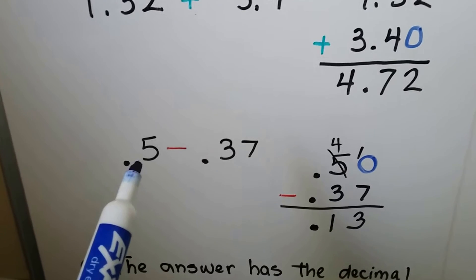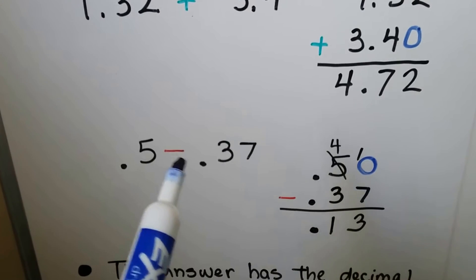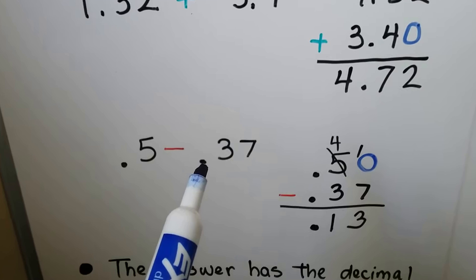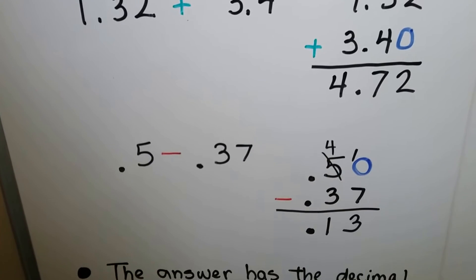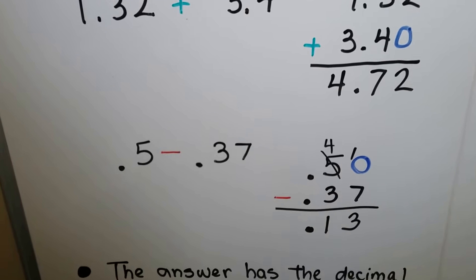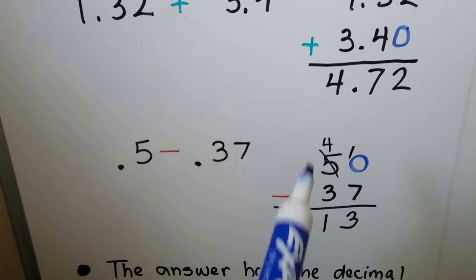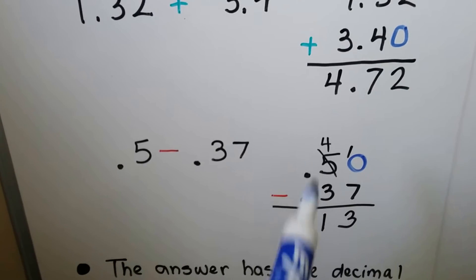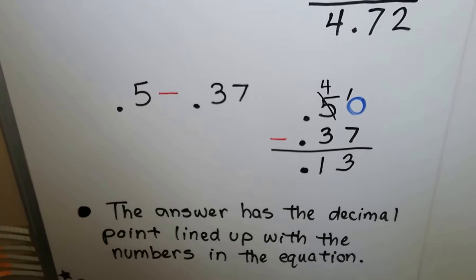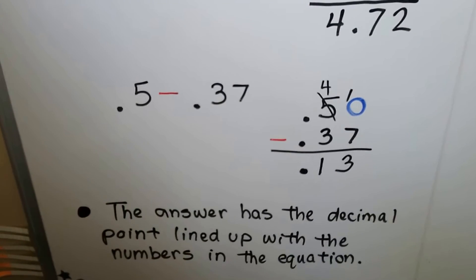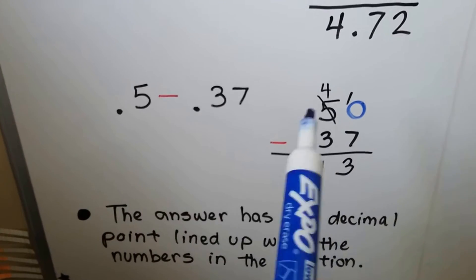If we're subtracting 0.5 take away 0.37, we can add a zero behind this 5 like that. And it'll look like 50 take away 37. Just remember to line your decimal points up and to put a decimal point in the answer. The answer has the decimal point lined up with the numbers in the equation.